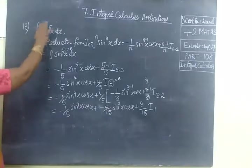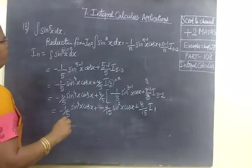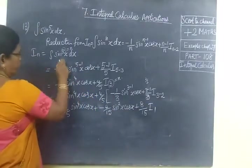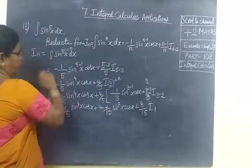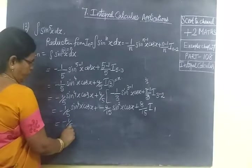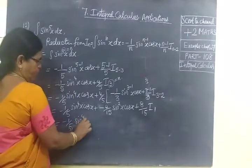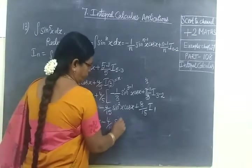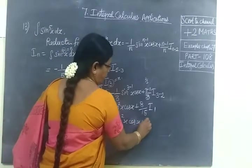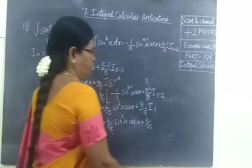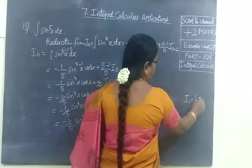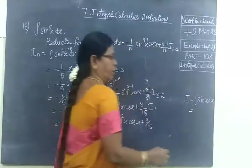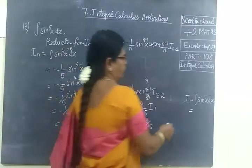I_1 is nothing but the question itself. For n you are writing, here the power is 1. So minus 1 by 5 sin power 4x cos x minus 4 by 15 sin squared x cos x plus 8 by 15 I_1. Integral sin power 1x dx. Integral of sin x is nothing but minus cos x.